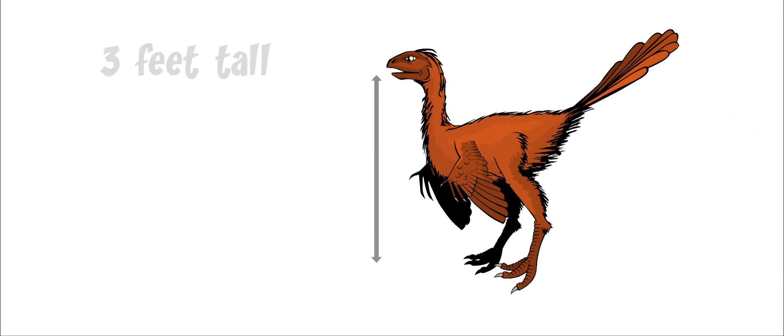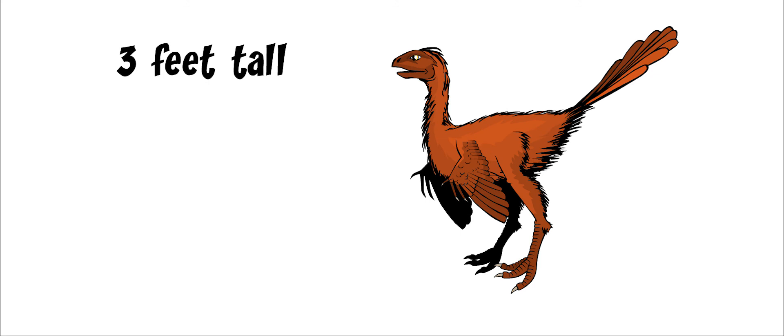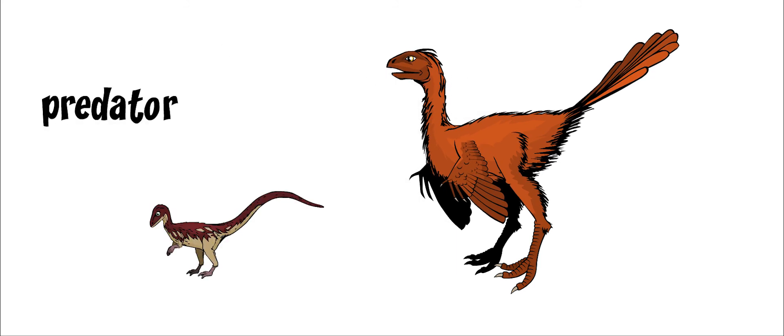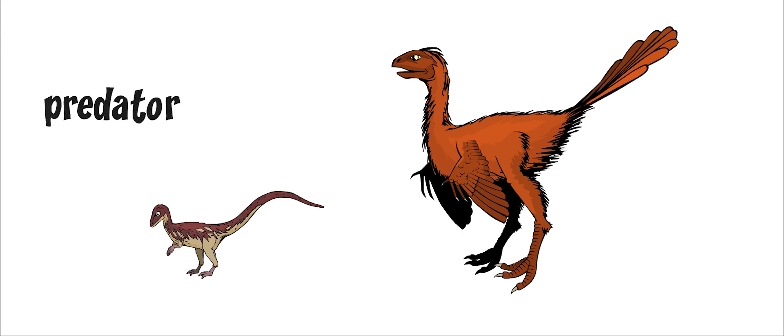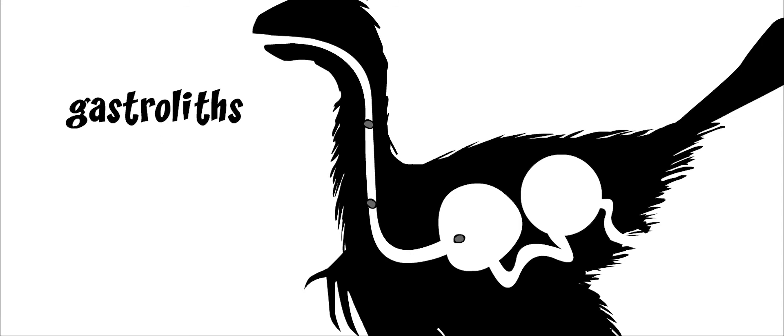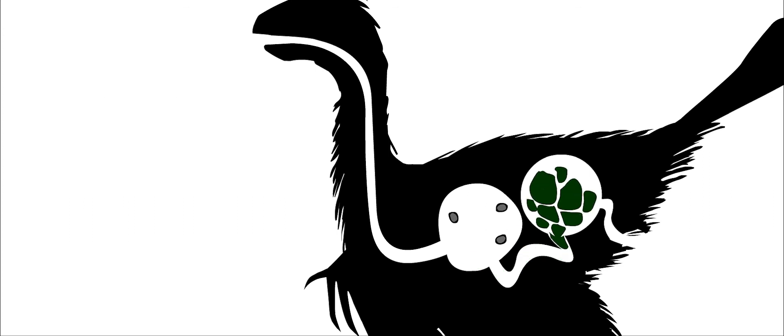Caudipteryx was about three feet tall, which is about the size of a turkey. It was a predator, meaning that it hunted other animals for food. But it also had small stones in its gizzard called gastroliths. Gastroliths help mash up tough plant food, so Caudipteryx also ate plants.